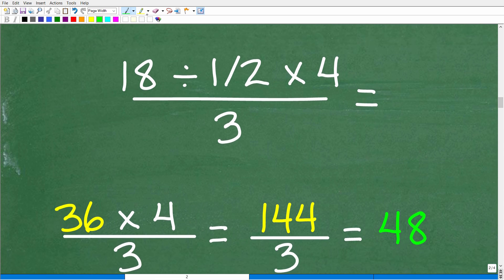All right, so here is our problem. We study the problem. We're like, all right, we've got a fraction. Here's the numerator. There's nothing to do in the denominator. So what do I have going on in the numerator? I have division, multiplication. So I've got to do what I see first from left to right. So 18 divided by 1/2 is 36.